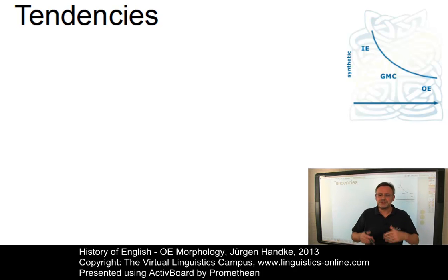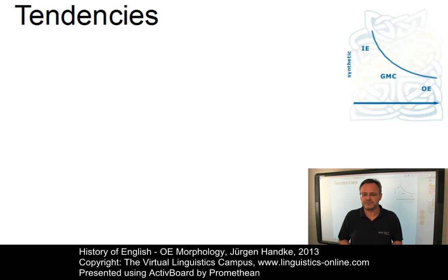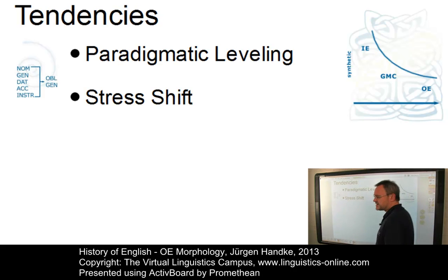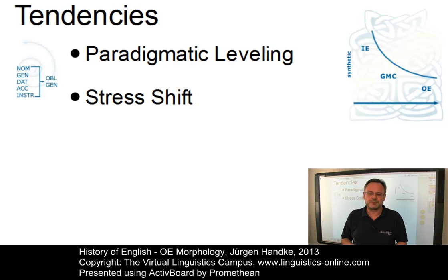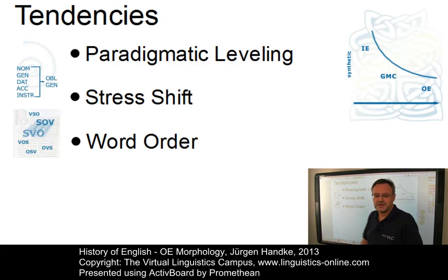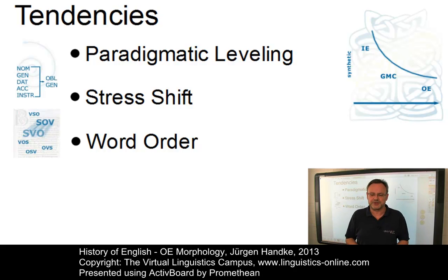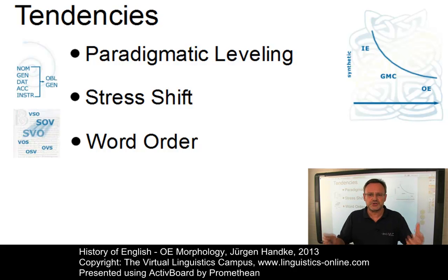Furthermore, the Old English system already exhibited a number of inherent tendencies that would contribute to its weakening. The most well-known of these are the minimization of paradigms through paradigmatic leveling and the shifting of the primary stress to root syllables. As a result, Old English had already developed a relatively fixed word order.